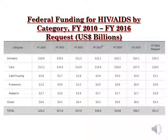This table shows the federal funding for HIV or AIDS by category from the year 2010 to 2016, including budget requests. From the table, we can see that most of the funds are spent on domestic care for HIV or AIDS patients.